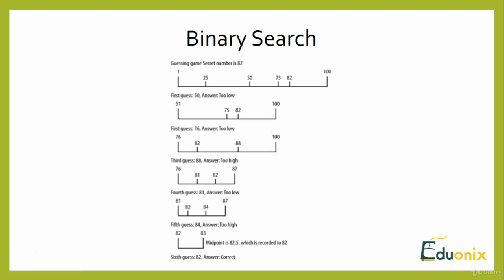This algorithm only works on a sorted data set. Step one: set a lower bound to the first position of the array. Step two: set an upper bound to the last element of the array, which is the length of the array minus one. While the lower bound is less than or equal to the upper bound, set the midpoint as upper bound plus lower bound divided by two. If the midpoint element is less than the data to be searched, set the new lower bound as midpoint plus one.